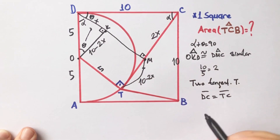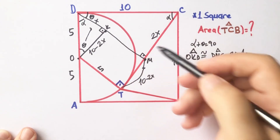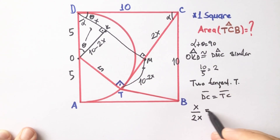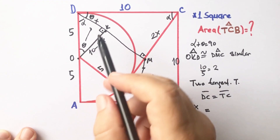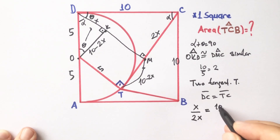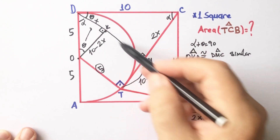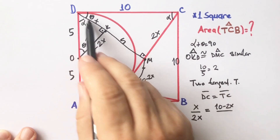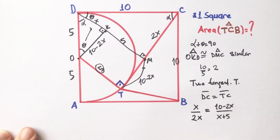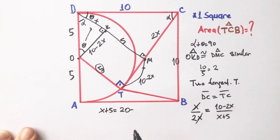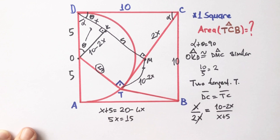Applying triangle similarity: x over 2x equals (10 minus 2x) over the side opposite alpha. Since this side is 5, the side opposite alpha equals x plus 5. Therefore x plus 5 equals 20 minus 4x, which gives 5x equals 15, so x equals 3 units.